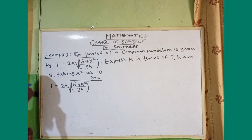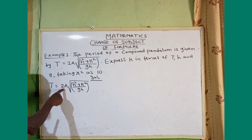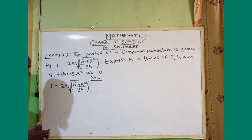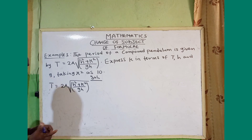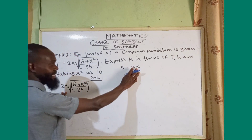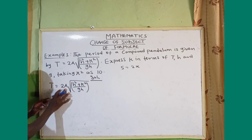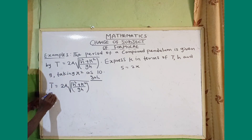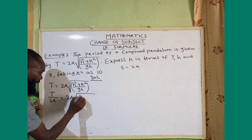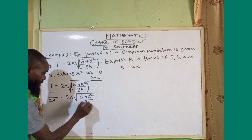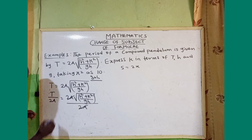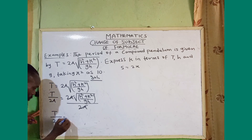We have t equals 2π times the square root of h squared plus k squared divided by gh. I cannot open the bracket because of the square root, but I can isolate the square root. Dividing both sides by 2π gives t over 2π equals the square root of h squared plus k squared divided by gh.